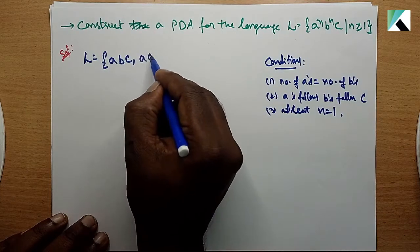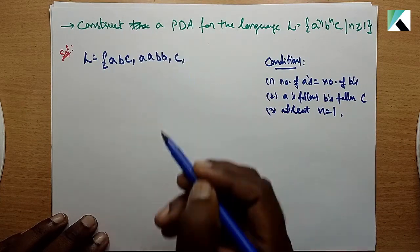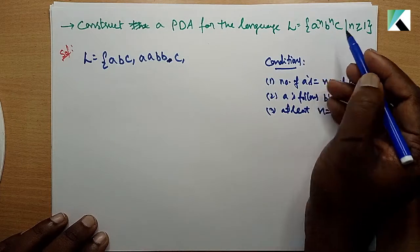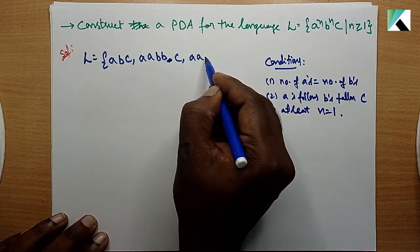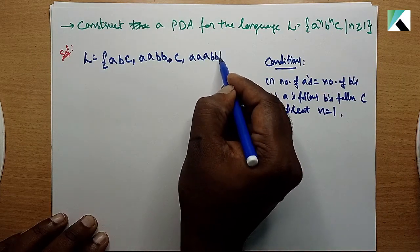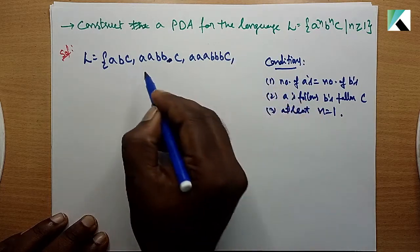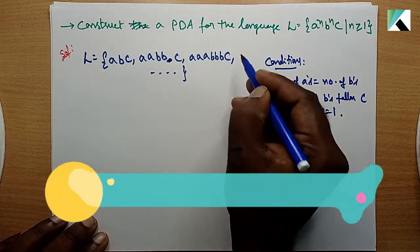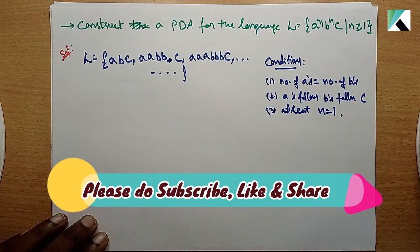N equals 2, the string is AABBC. N equals 3, the string is AAABBBC. Likewise, we are having number of strings.